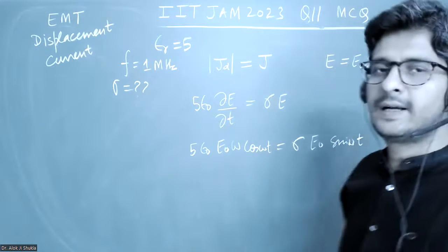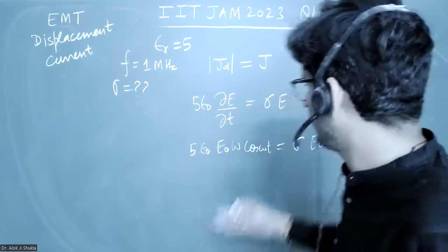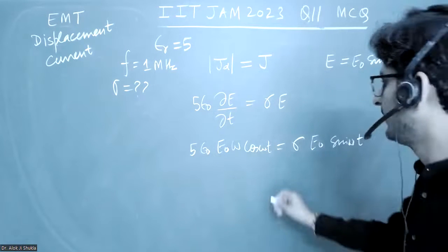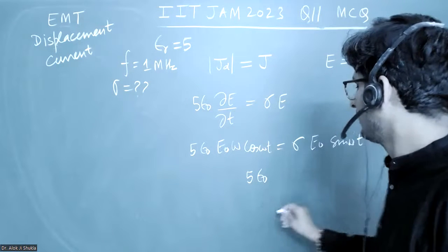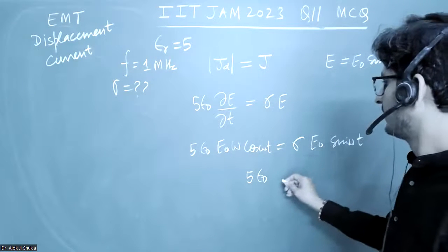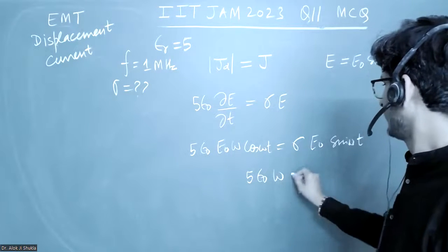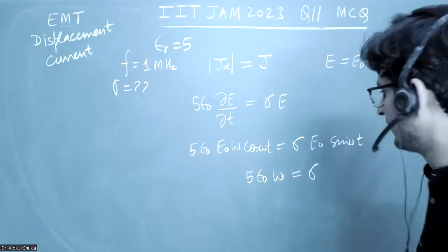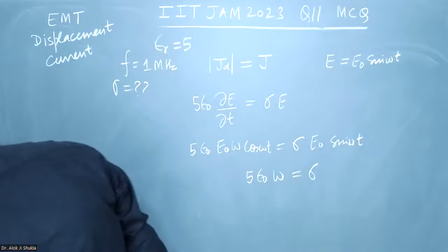They are saying it's amplitude, so amplitude means the maximum value we have to take. Therefore, 5ε₀ω will be equal to σ. What will be this value if we calculate?